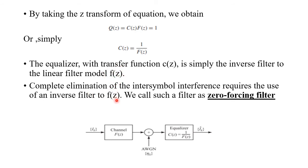Complete elimination of inter-symbol interference requires the use of an inverse filter to F(z), which we call a zero-forcing filter, since it forces ISI to zero. In the block diagram: ik → channel F(z) → add AWGN ηk → equalizer C(z) = 1/F(z) → ik_cap. This is the transmitted signal and this is the received estimate.